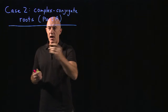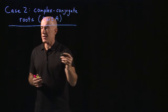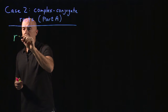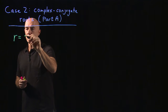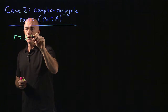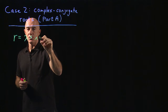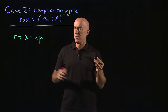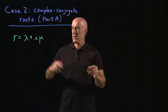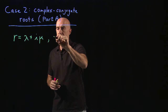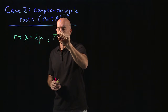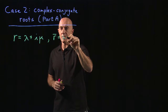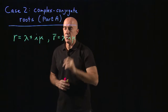We've solved the characteristic equation and let's say we found a complex root lambda plus i mu, where lambda and mu are real numbers. We also found the complex conjugate, r-bar equals lambda minus i mu.